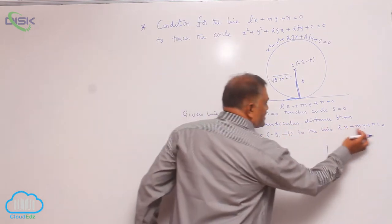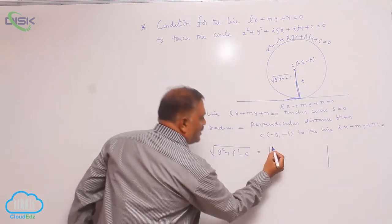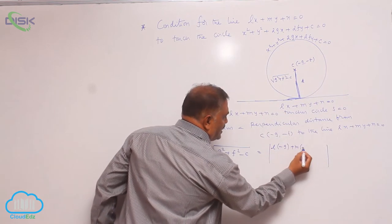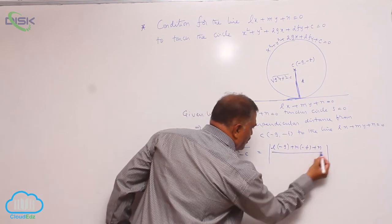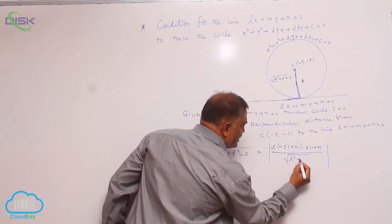So, in place of x and y substitute the center: L into minus g, m into minus f plus n, divided by square root of l square plus m square.